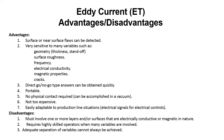Eddy Current Testing Advantages and Disadvantages. Advantages: surface or near surface flaws can be detected. Very sensitive to many variables, such as geometry, surface roughness, frequency, electrical conductivity, magnetic properties, and cracks. Direct go/no-go type answers can be obtained quickly. It's portable, no physical contact required, can be accomplished in a vacuum. Not too expensive, easily adaptable to production line situations. Electrical signals for electrical controls. Disadvantages: must involve one or more layers and/or surfaces that are electrically conductive or magnetic in nature. Requires highly skilled operators when many variables are involved. An adequate separation of variables cannot always be achieved.